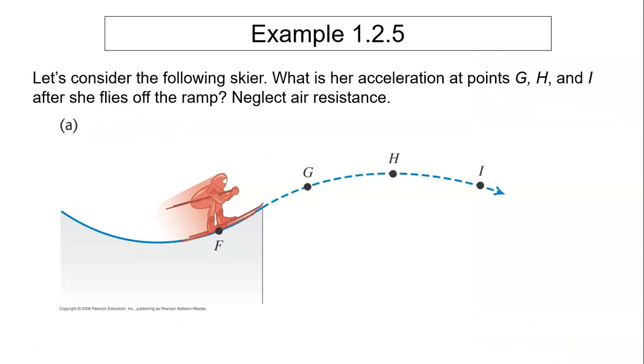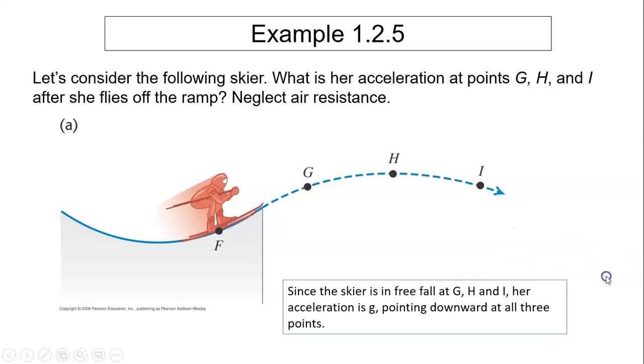Example, let's consider the following skier. What is her acceleration at point g, h, and i after she flies off the ramp? Neglect the air resistance. Since at all three points she's in air, the only force is gravity. So her acceleration would be gravitational acceleration. So at all three points, they are the same.